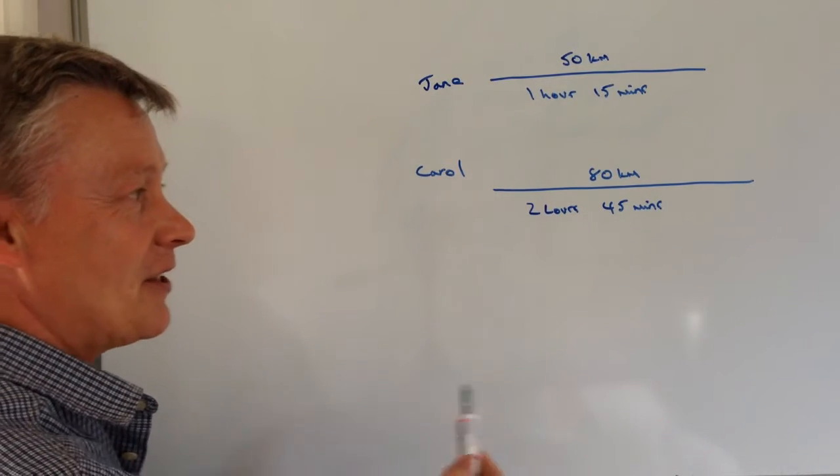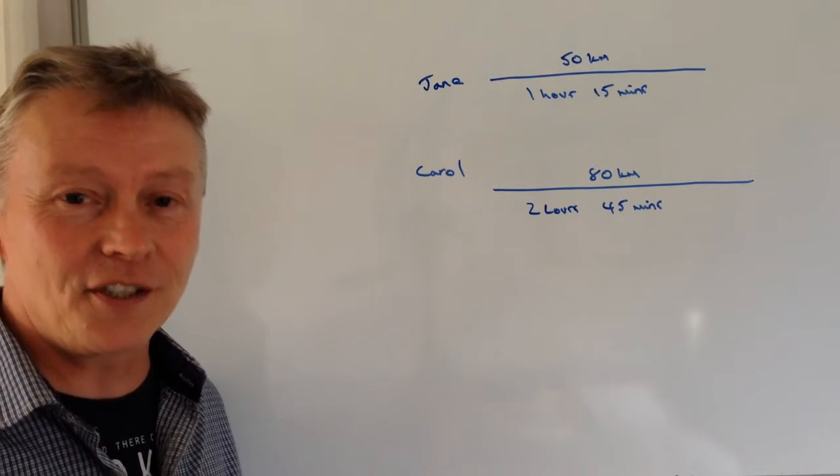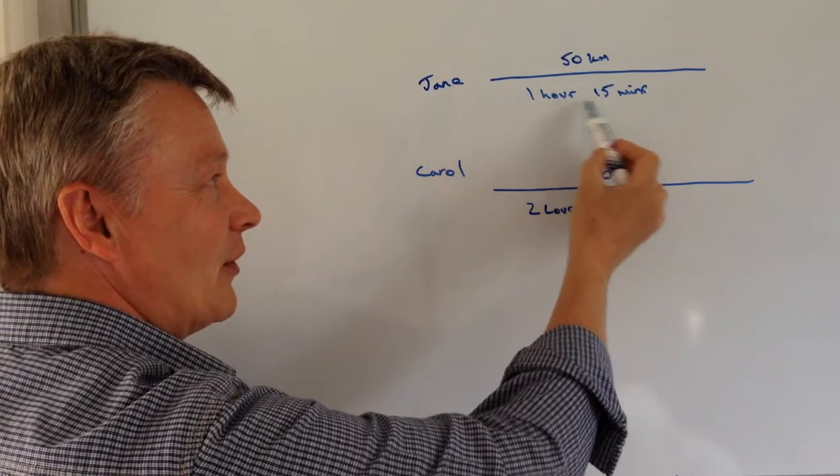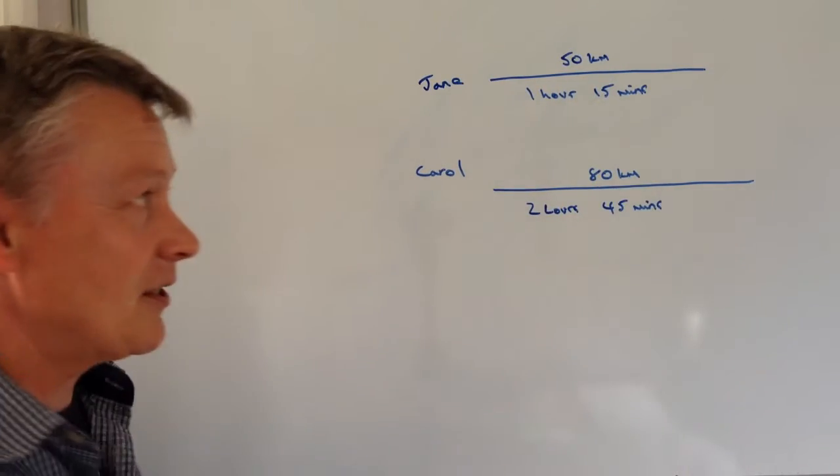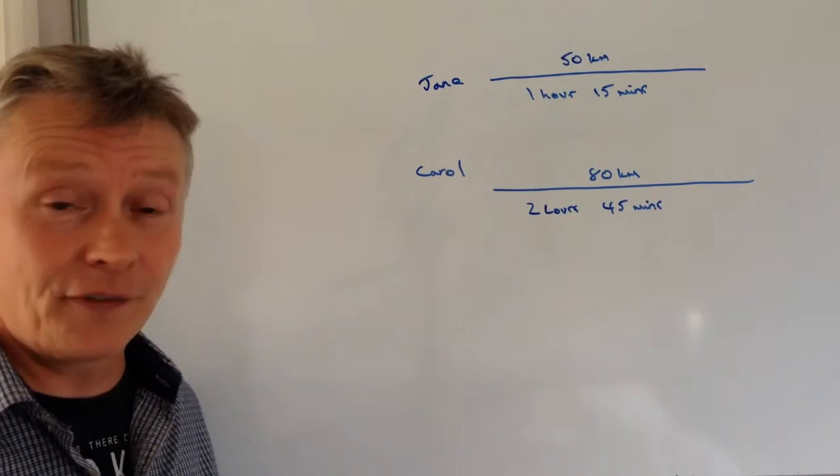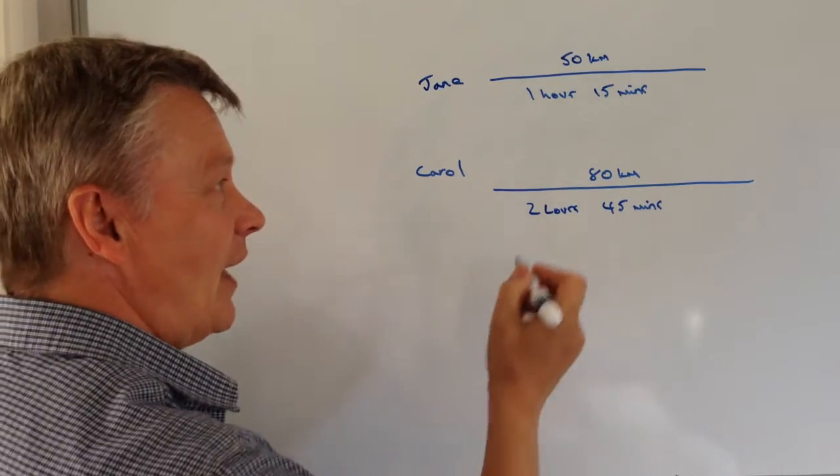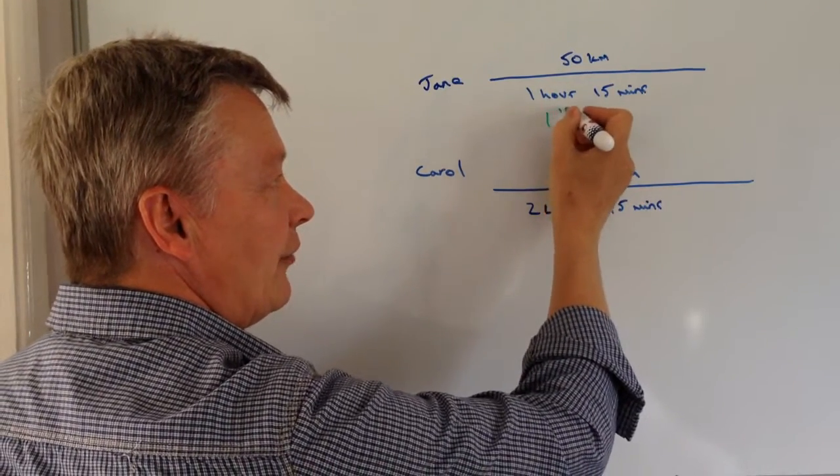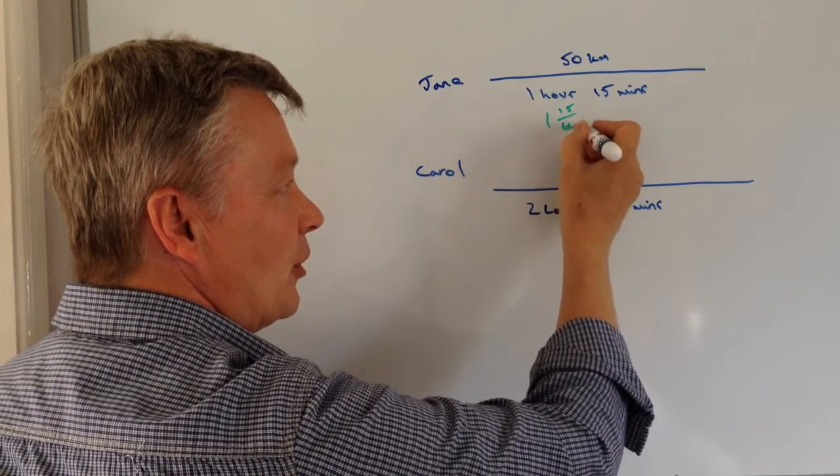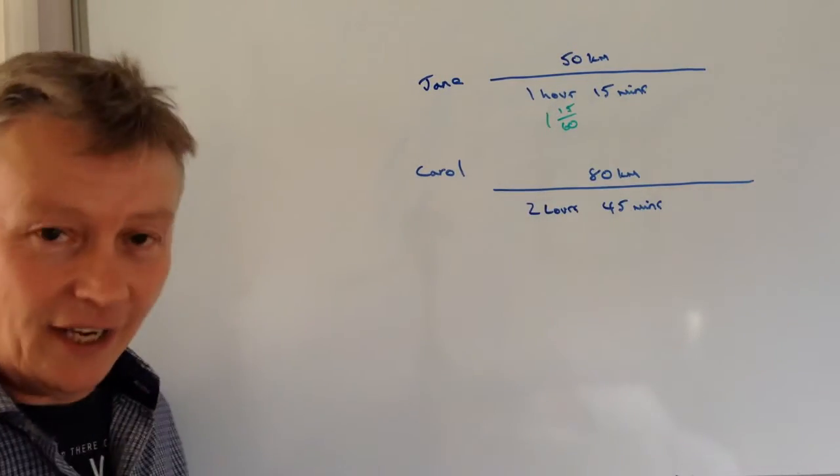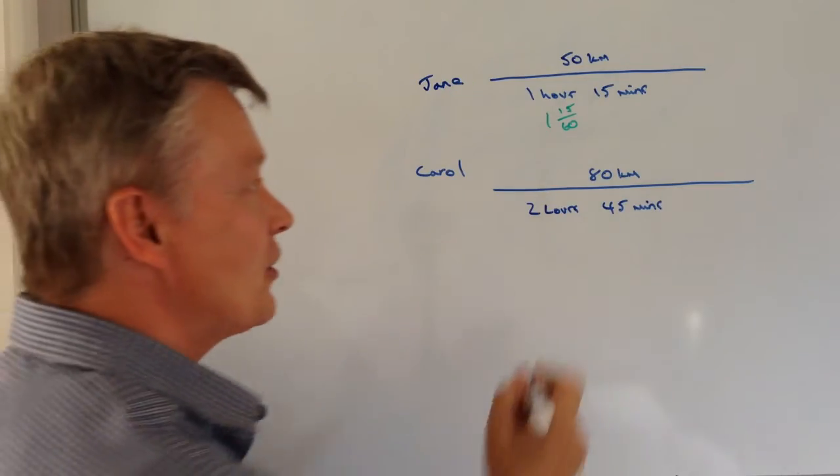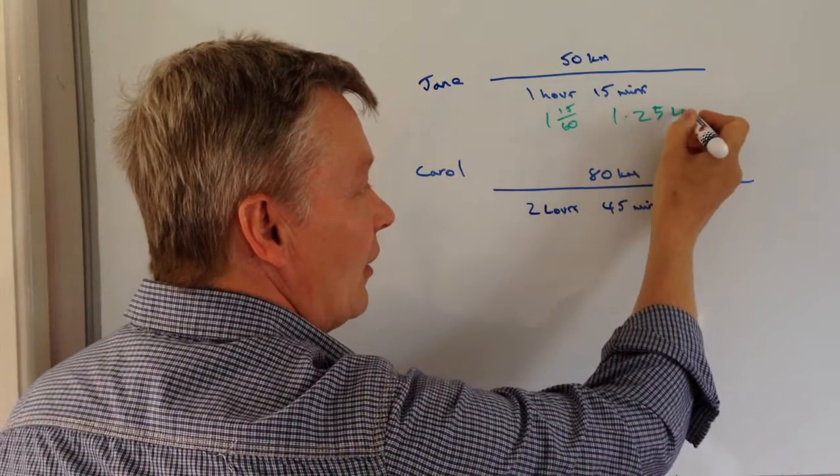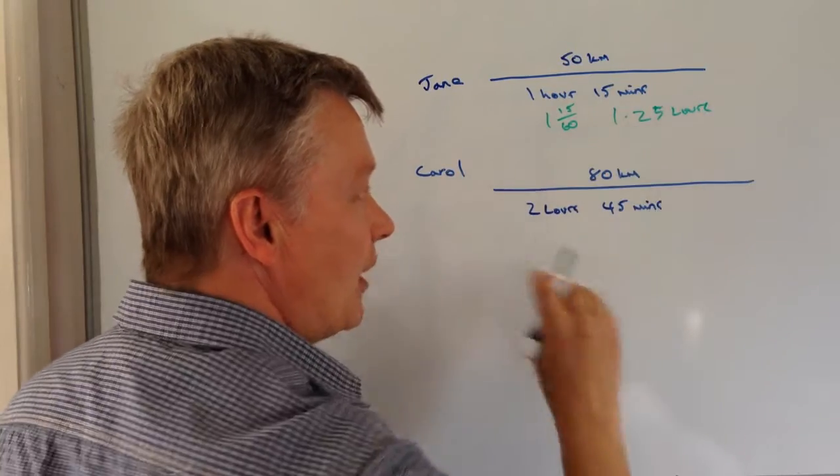Okay, so the first thing is speed in these questions is measured in kilometres per hour. We have to make sure we've got the same units, and we've got 1 hour and 15 minutes. We need to convert that to hours. So that's 1 hour and then 15 out of 60 minutes, which converts to 1.25 hours. And it's really important that you make sure each time you do this calculation to reflect the correct hours.